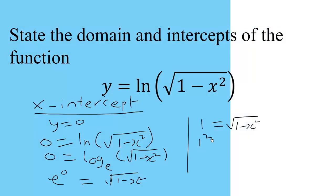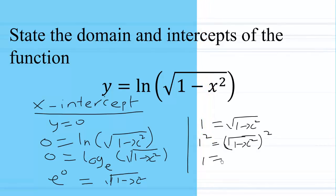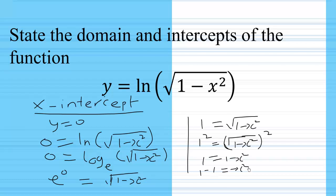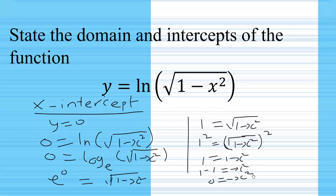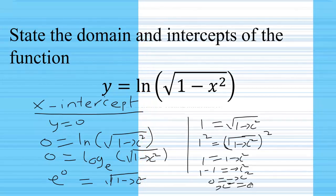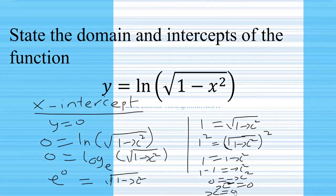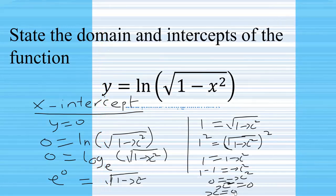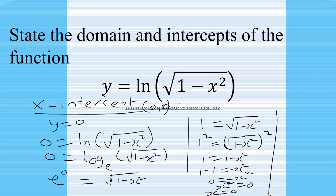Since e to the power of 0 is 1, we have 1 equals the square root of 1 minus x squared. Squaring both sides gives 1 equals 1 minus x squared, so 0 equals negative x squared, meaning x squared equals 0, and therefore x equals 0. The x-intercept is (0, 0).